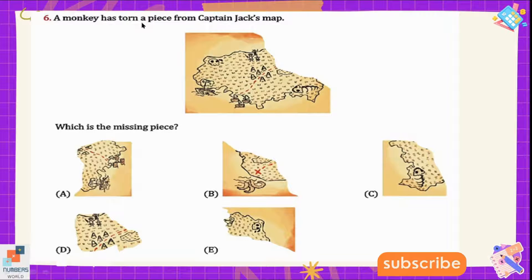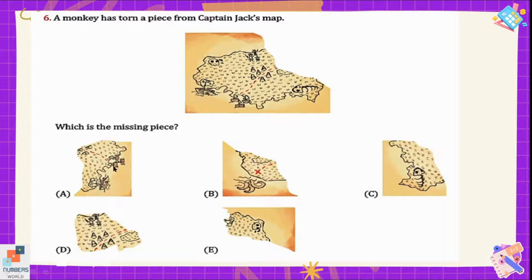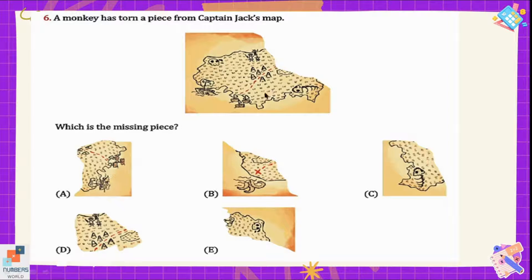Question number six: a monkey has torn a piece from Captain Jack's map — which is the missing piece? In option A there are boards which can be found on the left corner of the map. In option B there is a cross which cannot be found anywhere on the map, so option B could be the missing piece. In option C there is a fish skeleton visible at the bottom right corner, and the mountains appear in the center. Option B is our answer because there is no cross visible anywhere on the map.